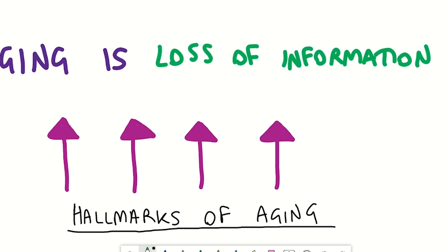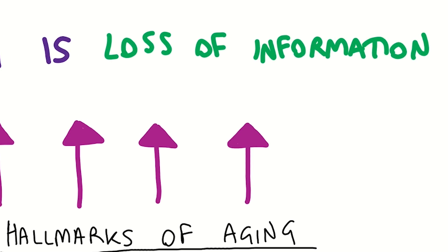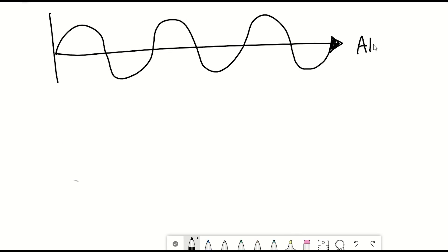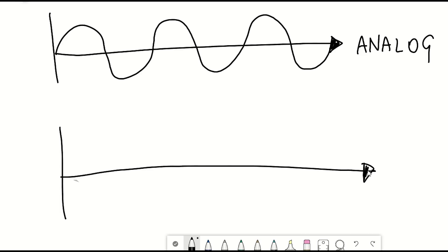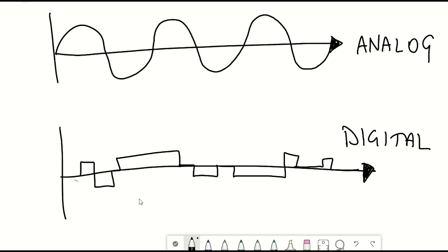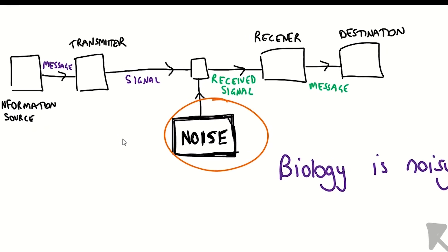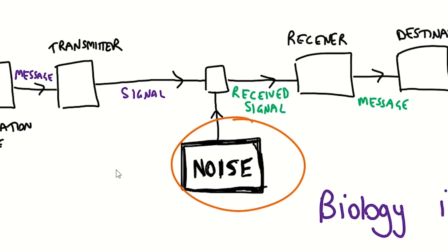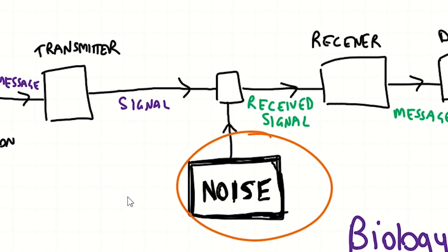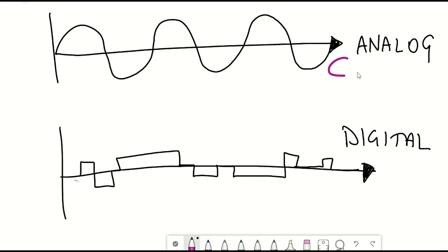So if ageing is simply loss of information, what is this information? There are two ways that information can be transmitted: digital and analogue. A key difference is that analogue is continuous whilst digital information is discrete. The problem this raises for analogue information is that it can accumulate noise. David makes the point that we have both analogue and digital information within ourselves — our genetic code being the digital information and the epigenetic code being the analogue information within our cells.